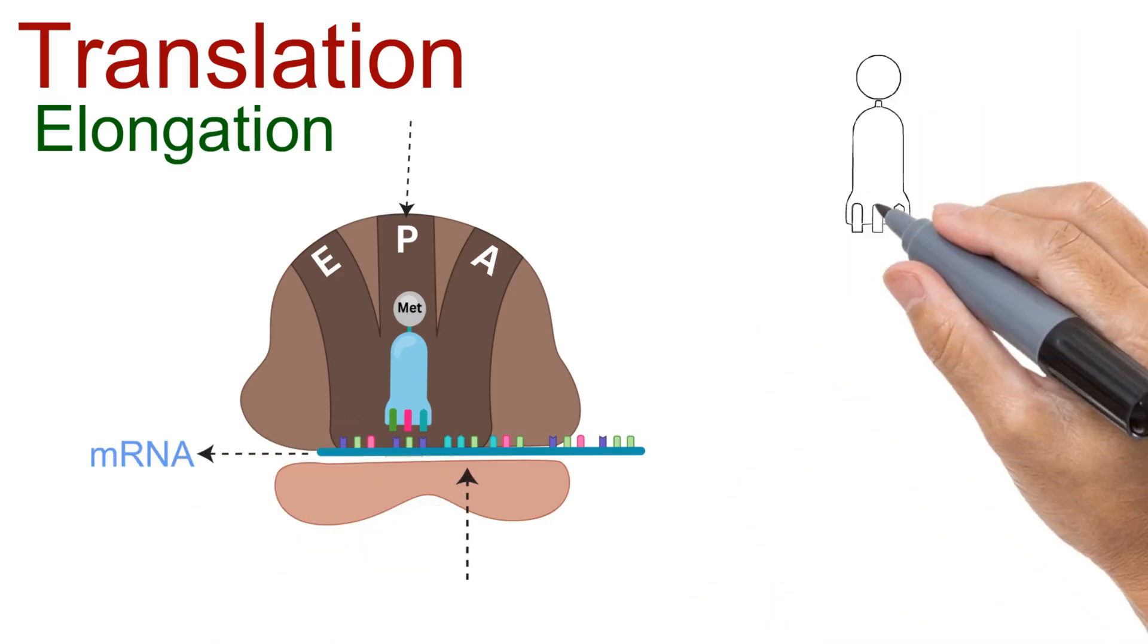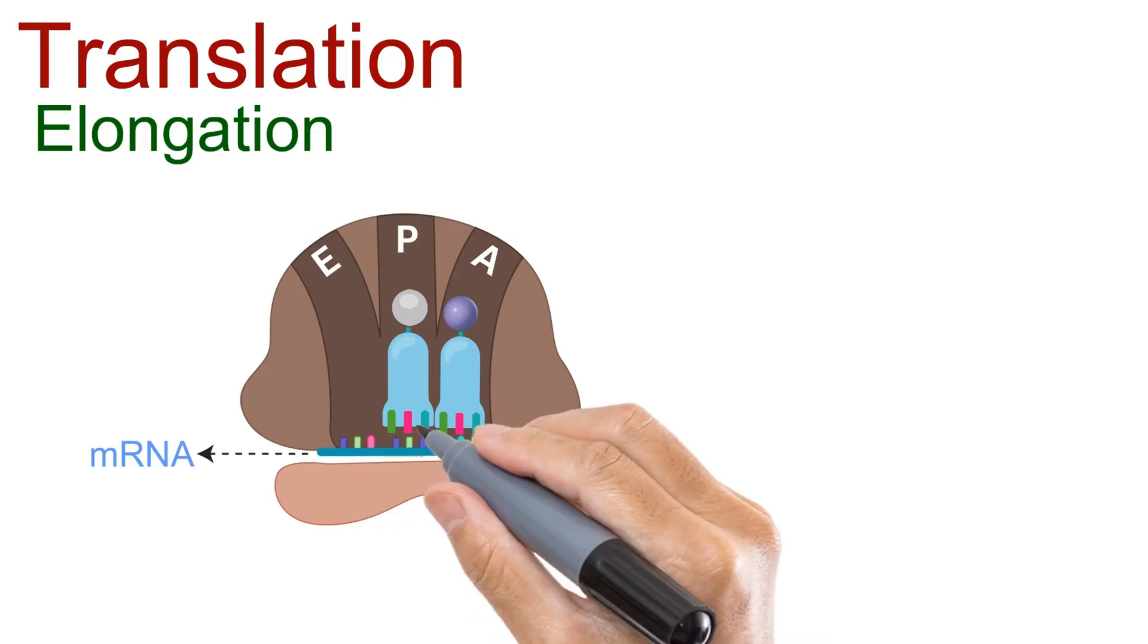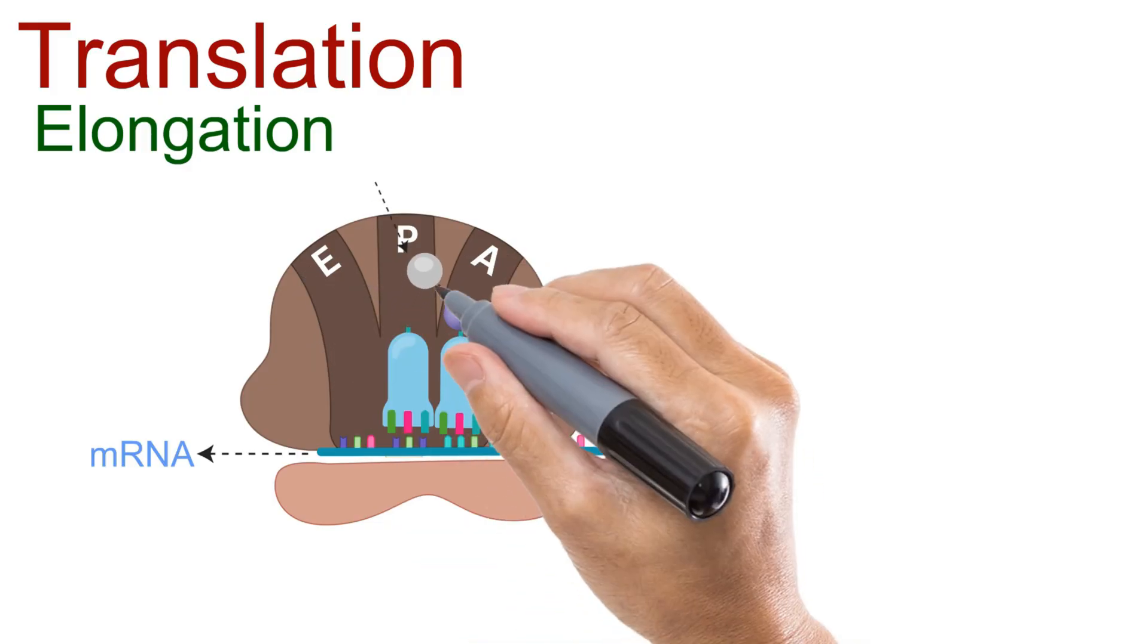A tRNA carrying the corresponding amino acid enters the A site and pairs its anticodon with the codon on the mRNA. The amino acid at the P site, that is methionine, is joined to the new amino acid at the A site by a peptide bond.